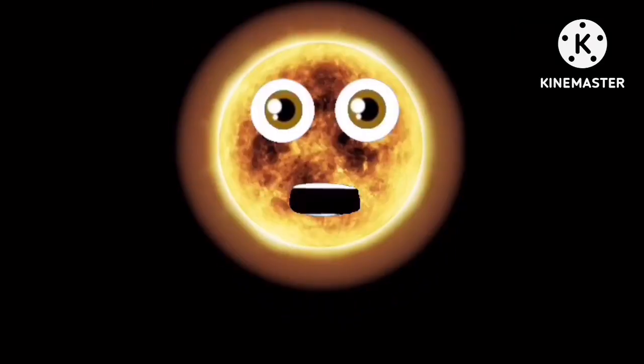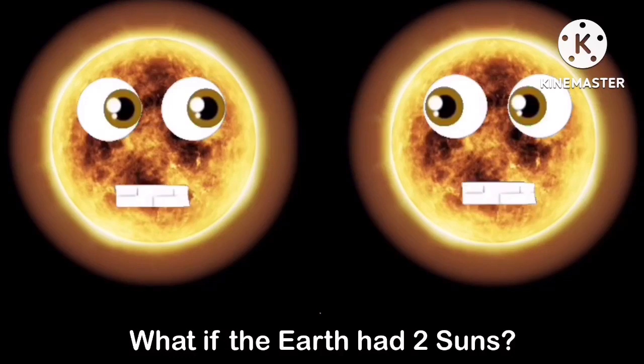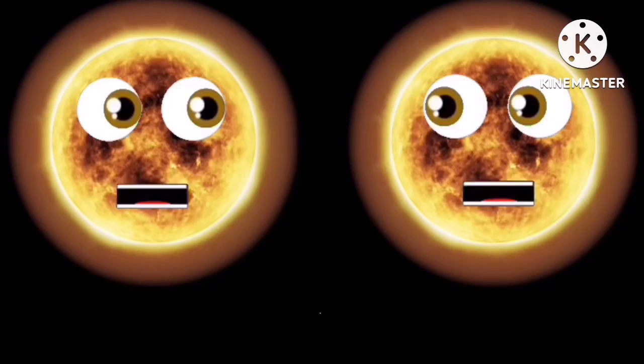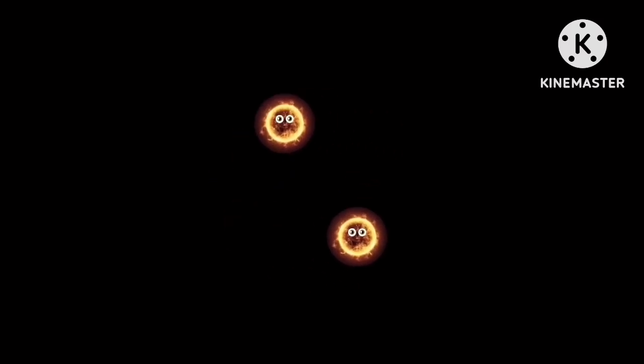What would happen if the Earth had two suns? Let's take a look at the Earth with a binary star system. A binary star system is two stars that are bound by gravity and orbit each other.